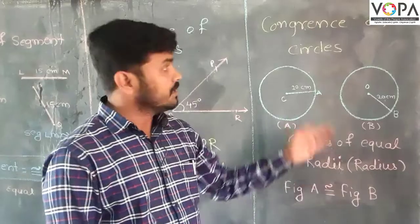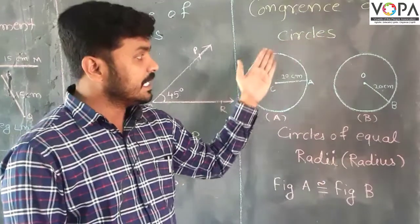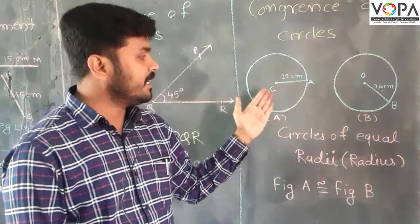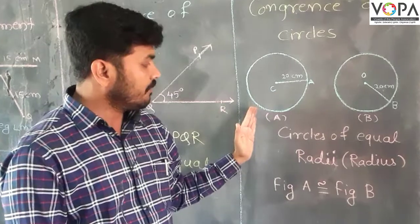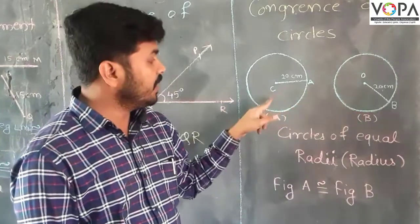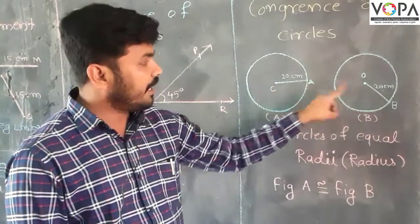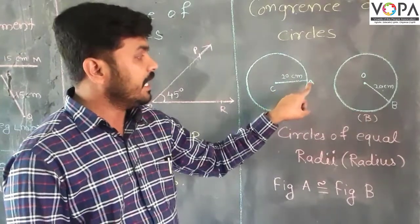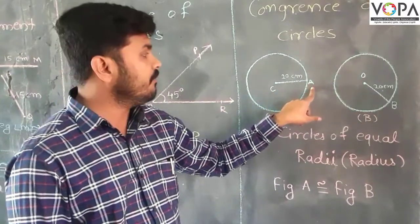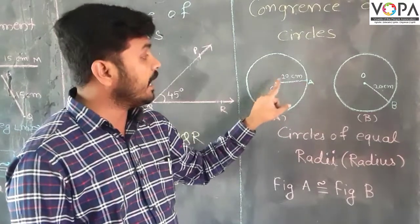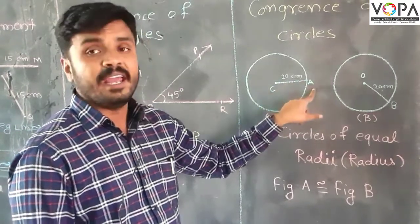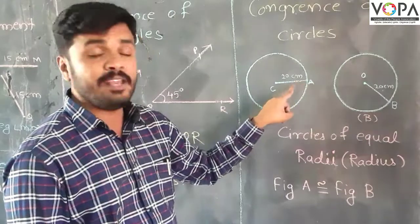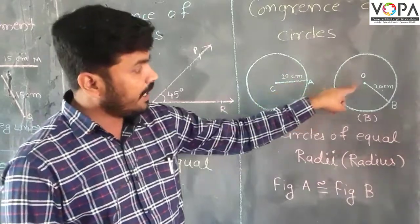And now the last one is congruence of circles. In these figures you can see that this is figure A and figure B. In figure A there is the center C, and in figure B there is center O. So there is C and A, where A is the point on the circumference of the circle, and this is the radius of circle CA and the measurement of that radius is 20 centimeters.